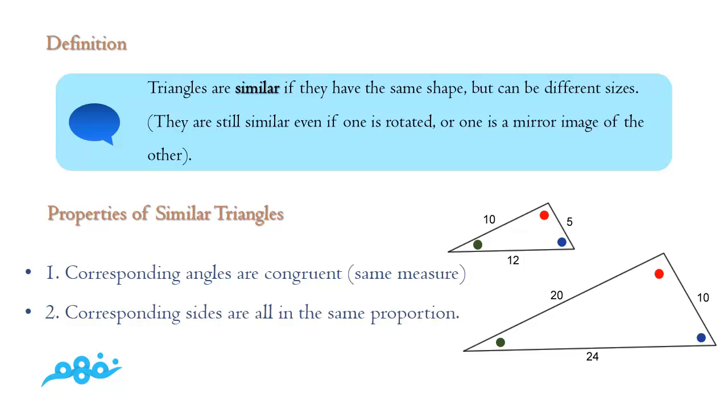When you're told that two triangles are similar, you can consequently conclude that corresponding angles are congruent. Like here, the two red angles have the same measurement, the two blue angles have the same measurement, and same with the green. The corresponding sides are all in the same proportion.